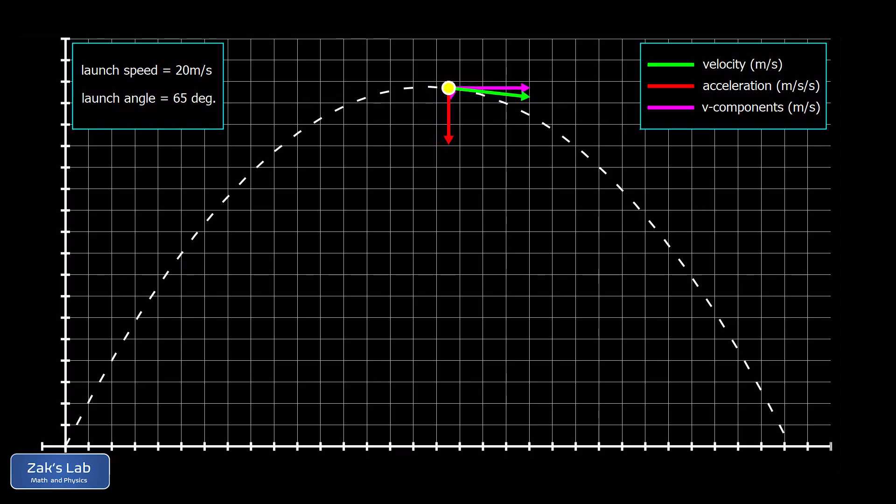So after we hit the top of the trajectory, that downward acceleration is going to keep adding in downward changes to the y-velocity. And that means the y-velocity now becomes negative.